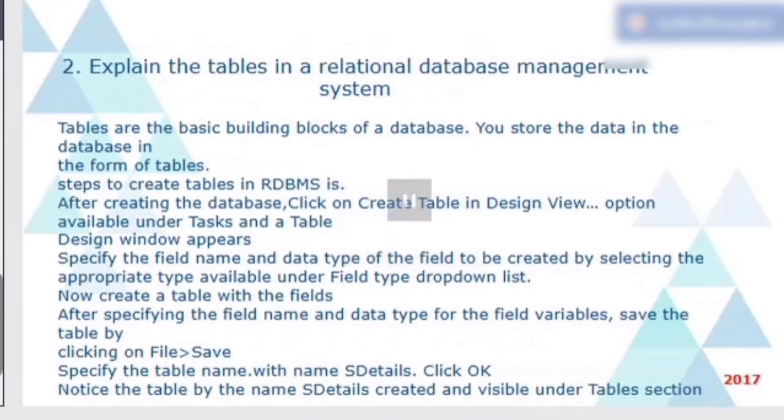And the last question is, explain the table in a relational database management system. Tables are a basic building blocks of a database. You store the data in a database in the form of tables. Steps to create tables in a RDBMS is, after creating a database, click on create table in design view option available under tasks and table. The design window appears. Specify the field name and the data type of a field to be created by selecting the appropriate type available under the field in a drop down list. Now create a table with the fields. After specifying the field name and the data type for the field variables, save the table by clicking on file and save. Specify the table name with the name as SDetails like student details and click OK. Notice the table by name student details created and visible under table section. This question was asked in 2017.